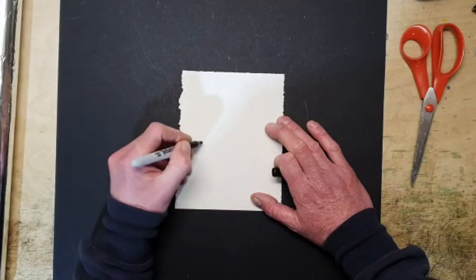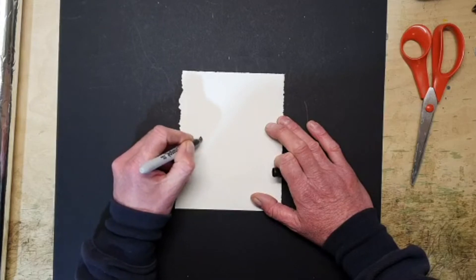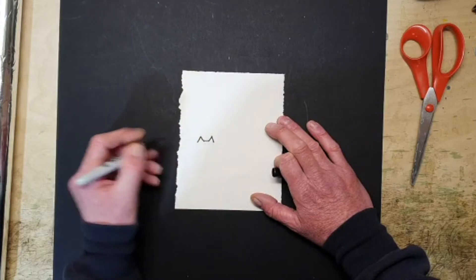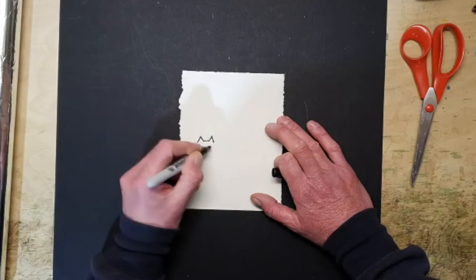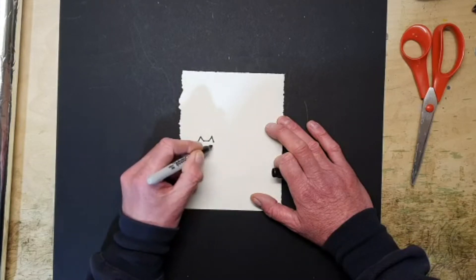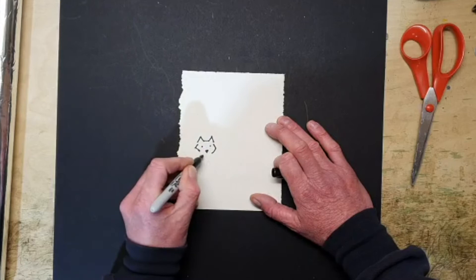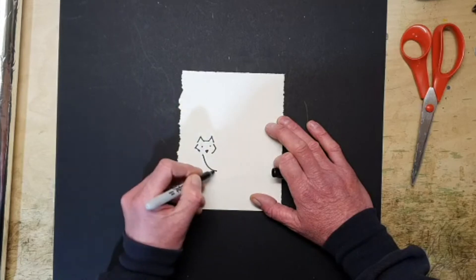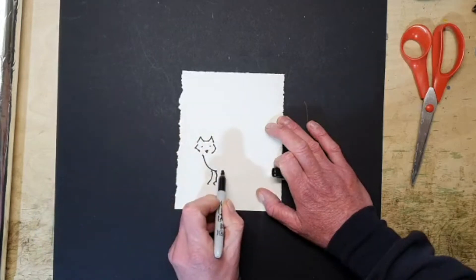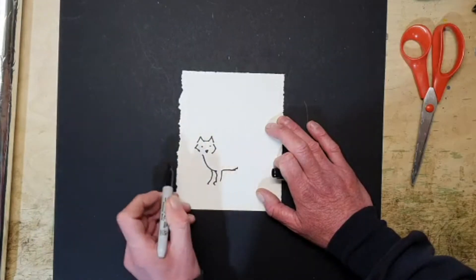The head is more of a diamond shape and they have quite big ears, much bigger than a cat. And then there's a little section here, they've got thicker feet, and a cat has a slightly longer body.